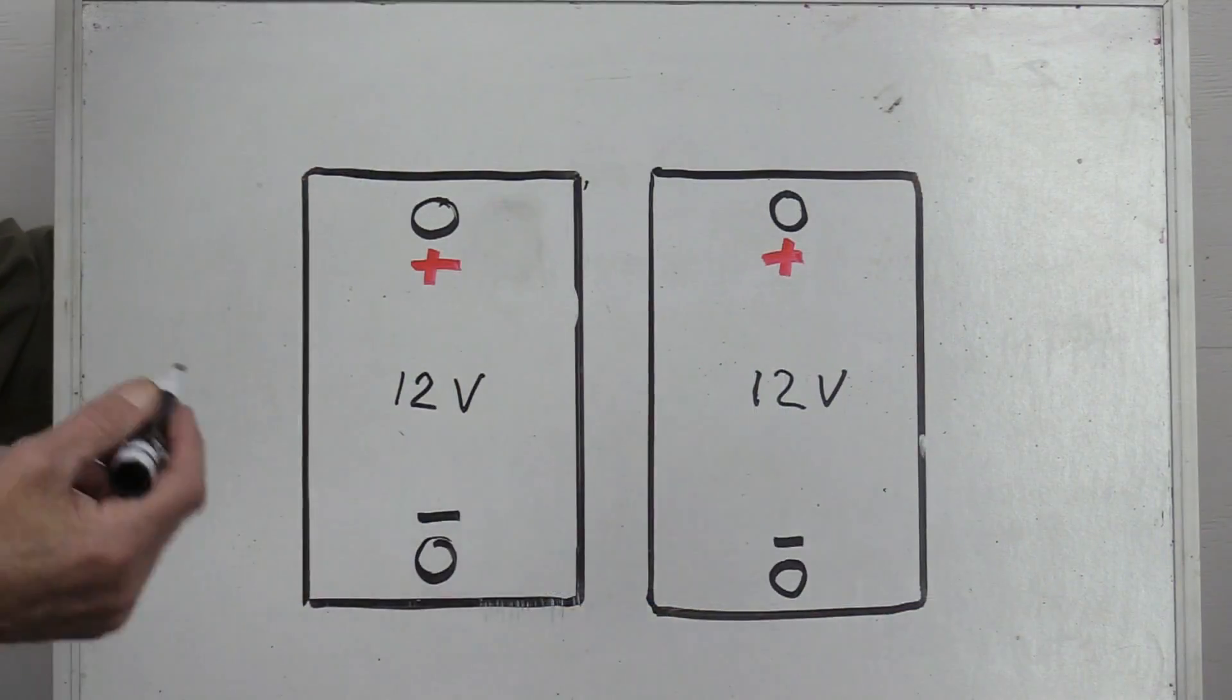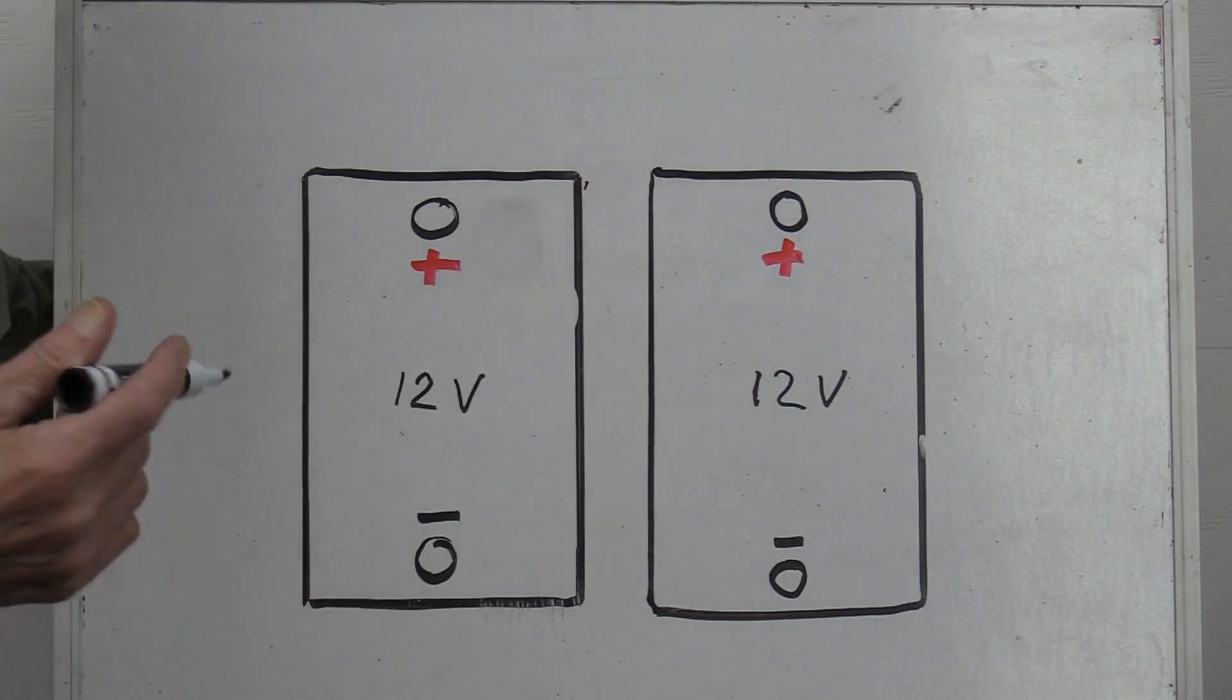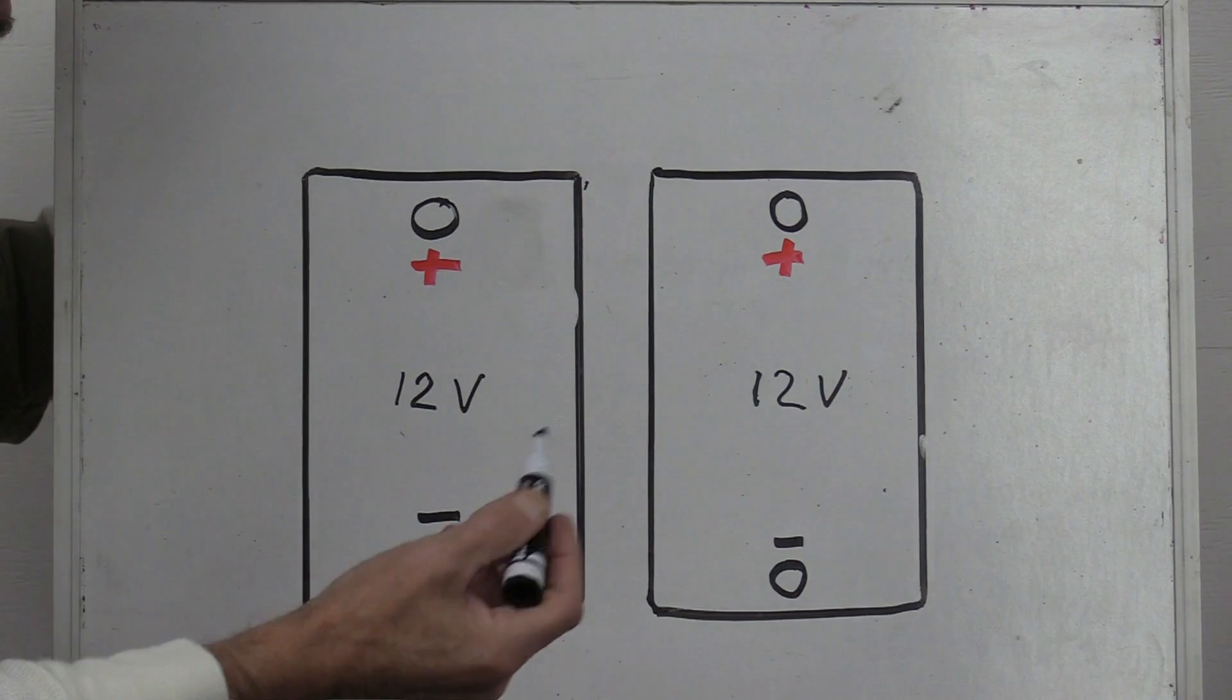So say we have a 12 volt system, a 12 volt inverter. We want to keep our battery bank all at 12 volt. How do you do that? It's pretty simple.